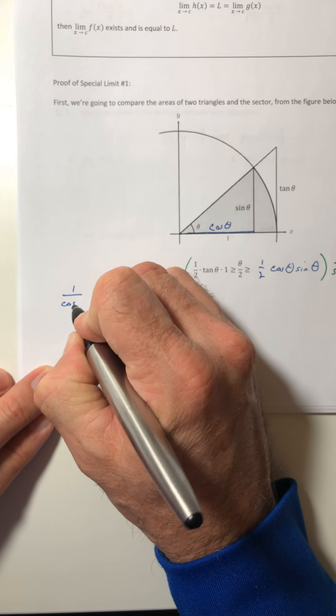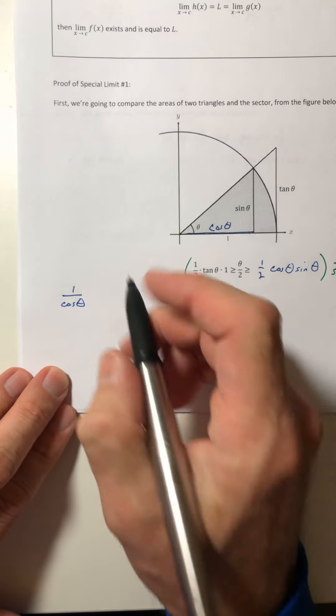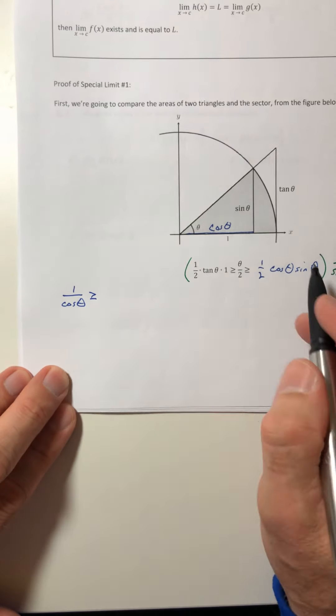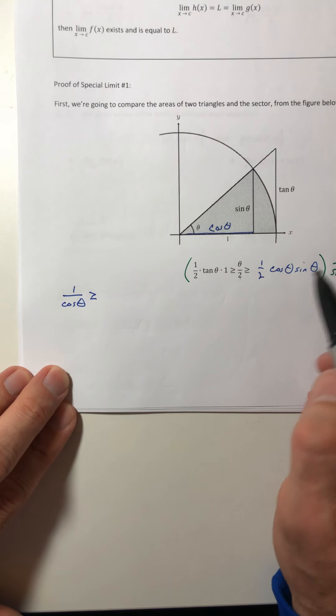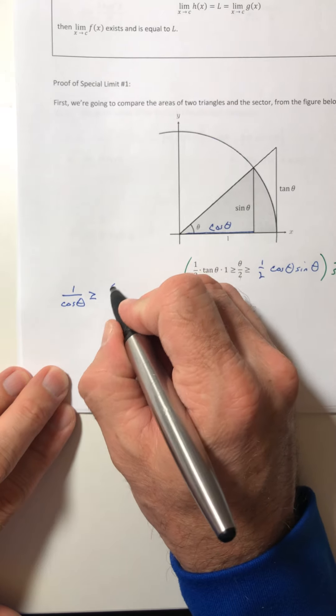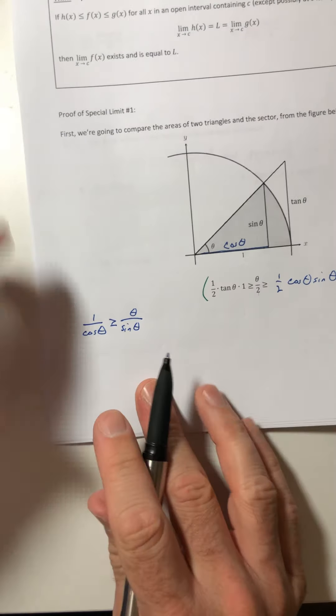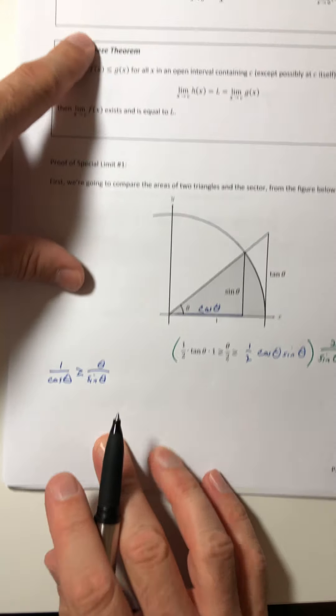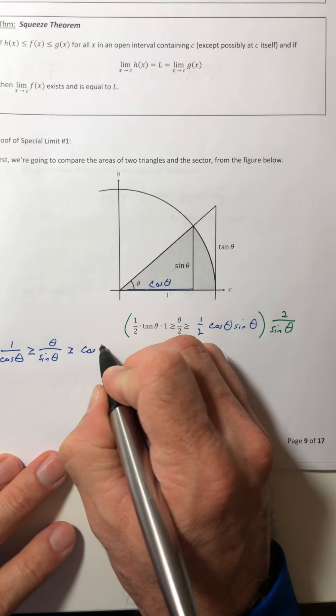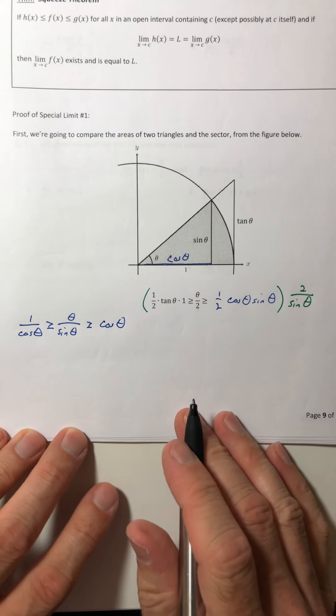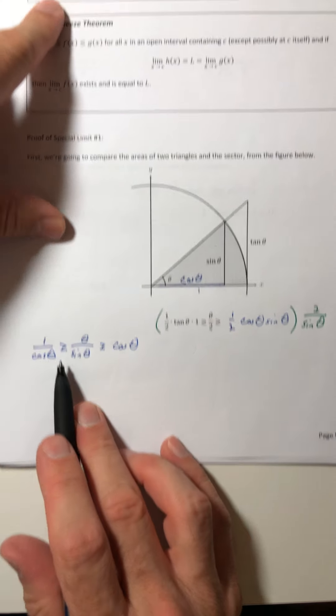In the middle, the twos cancel, but the theta is still on top, and then the sine of theta would be underneath. Hey, that looks kind of like what we're trying to get to, right? It's just upside down. Well, let's keep going with it and see what happens. So then if I multiply it to this next one, the twos are gone, the sines are gone, and the cosine of theta is the only thing left.